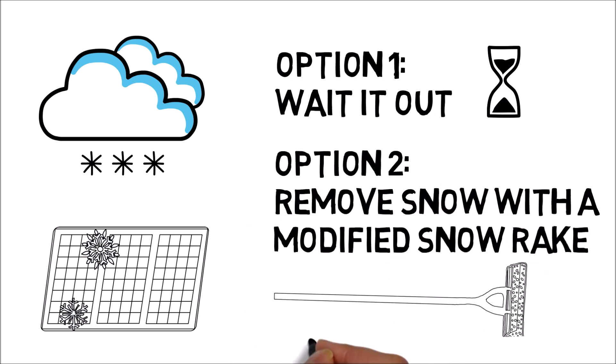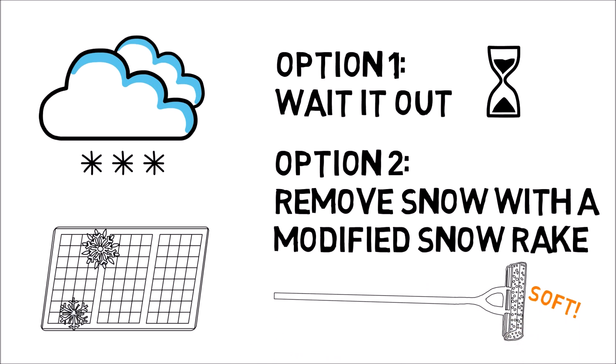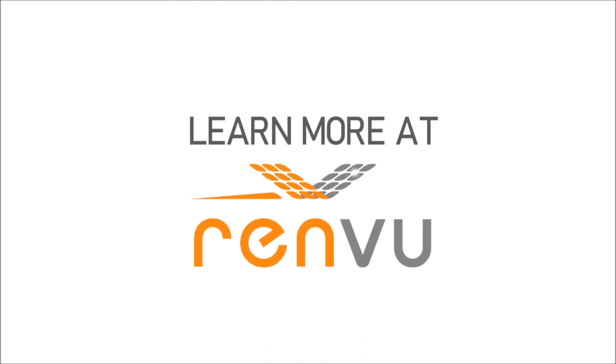You can purchase a regular snow rake and then securely attach a soft squeegee-like strip or a sponge. To learn more, go to rendu.com in the link below.